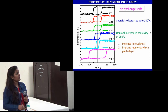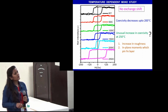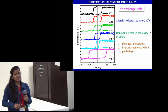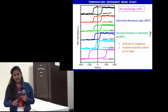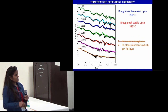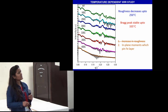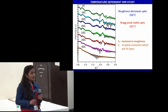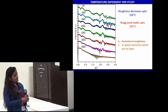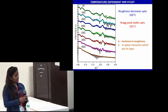We then annealed this sample and observed that the coercivity first decreases up to 200°C, but at 250°C there was a sudden increase in coercivity. This may be due to two reasons: increased roughness from diffusion within the multilayer, or in-plane moments generated at the interface which pin the Fe layer. We performed XRR measurements as a function of temperature and observed that at 250°C the multilayer structure was still maintained, and there was actually a decrease in interface roughness. Hence increased interface roughness cannot be the reason; instead, in-plane moments pinning the Fe layer likely account for the increase in coercivity.